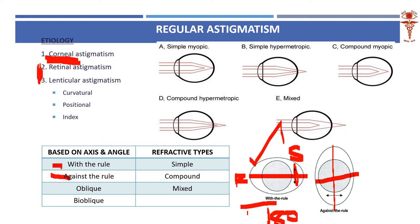If you check your spectacle power and they have written a minus cylinder with the axis mentioned as 180 degrees, then you are with the rule. The vice versa is against the rule — if you have a plus cylinder at 180 degrees, it is against the rule.